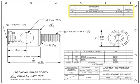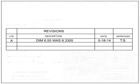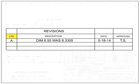The revisions block is a tabulated list of the revisions that have changed the original drawing. The revisions block is typically located in the upper right-hand corner of the drawing, although some drafting standards attach it in some way to the title block. The sequence for revision letters starts with A as the first revision, followed by B for the second, and so on. A drawing that has had no revisions has a blank revisions block.